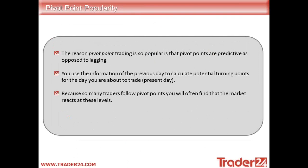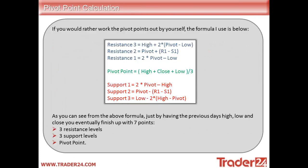Because so many traders follow pivot points, you will often find that the market reacts at these levels. It's very similar to things like Fibonacci levels and support and resistance as well. If you combine these all together, what you'll tend to find is that there are quite a few pending orders at these various levels.